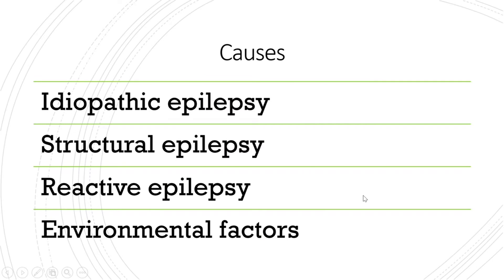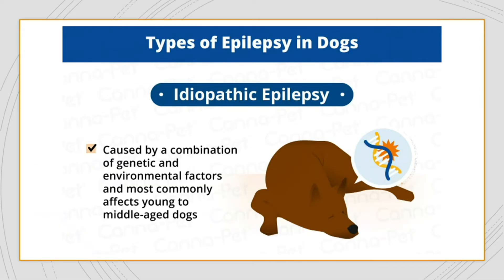There are various causes of epilepsy: idiopathic, structural, reactive, and environmental factors. Idiopathic epilepsy, as the name implies, means the cause is unknown. The vet will run tests trying to determine a factor, but when nothing is found it's classified as idiopathic. This is the most common diagnosis for dogs with epilepsy, since it can be hard to pinpoint the cause — it's likely a combination of genetic and environmental factors.